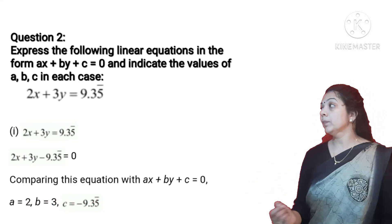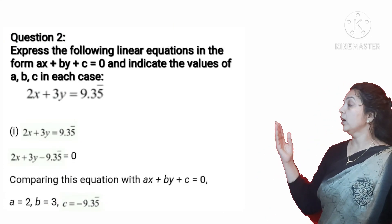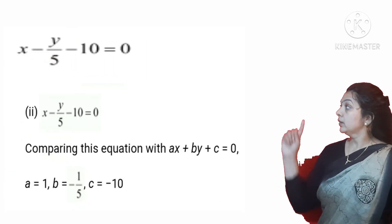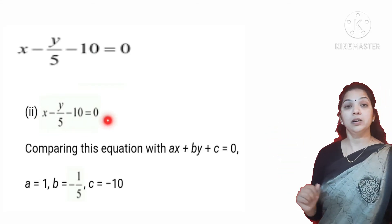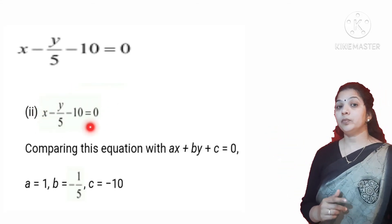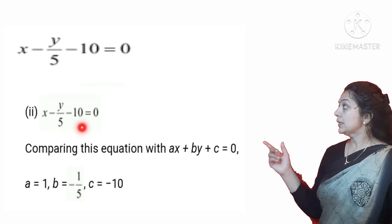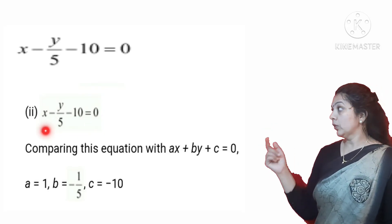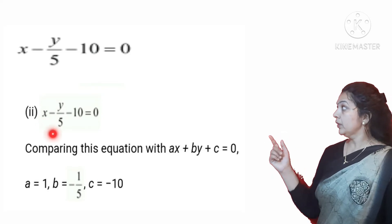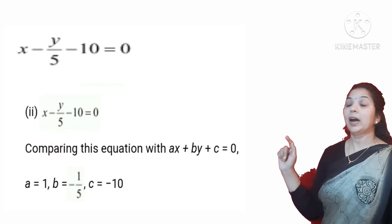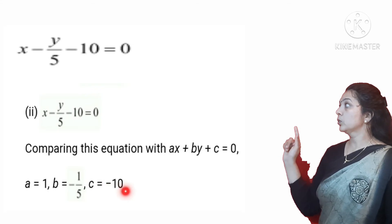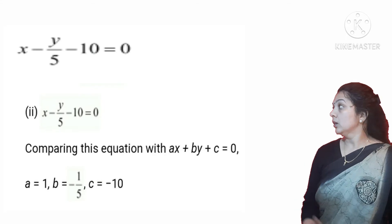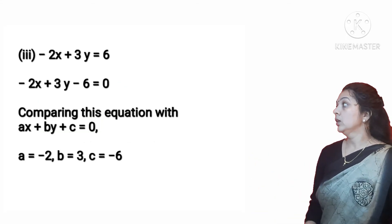The second part is X minus Y/5 minus 10 = 0. This is already in general form. So the value of A is 1, the value of B is minus 1/5, and the value of C is minus 10.